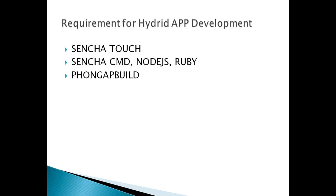To convert this JavaScript code into an app we need PhoneGap Build. PhoneGap Build will help us generate an APK file for Android and an IPA file for iOS devices, and similarly for Windows and BlackBerry you can generate all install builds through PhoneGap Build.